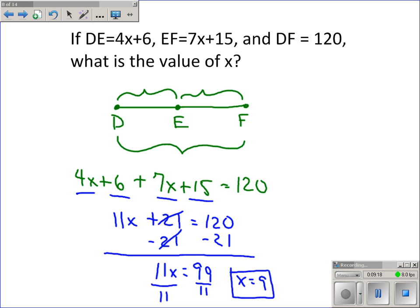Before I leave this question, I'm going to check my answer. 4 times 9 is 36, plus 6 is 42. And 7 times 9 is 63, plus 15 is 78. And 42 plus 78 is equal to 120. So the answer must be 9.